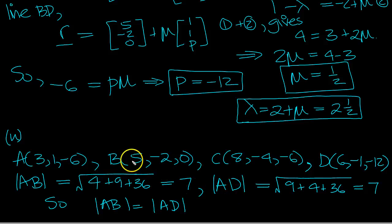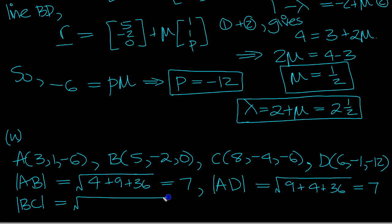I'm just going to do them all actually. So BC now, we need to show all the sides are the same. 5 to 8 is 3 so that would be 9. Minus 2 to minus 4 is the difference of 2 so that would be 4. And 0 to minus 6 is the difference of 6 so that would be 36. And the last one, CD. So C to D, 6 to 8 is 2, 4. And then minus 4 to minus 1 is the difference of 3 so that's 9. And then minus 6 to minus 12 is the difference of 6 so that's 36. So that's equal to 7.